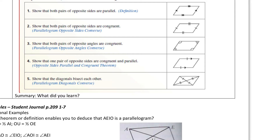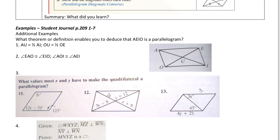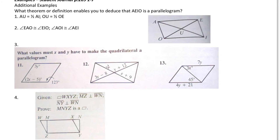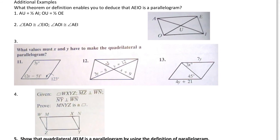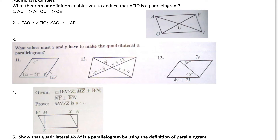That's pretty much the lesson — how to identify if something is a parallelogram. So we're going to do some examples. The first one: what theorem or definition enables you to deduce that AEIO is a parallelogram? Well, if I know that AU is one half of AI, and I know that OU is one half of OE, that means the diagonals bisect each other.